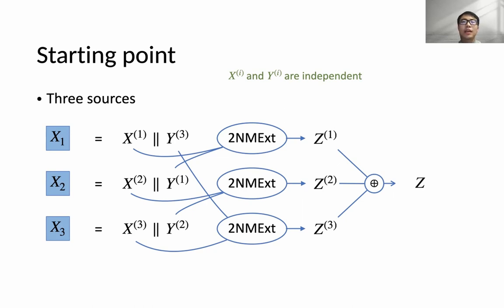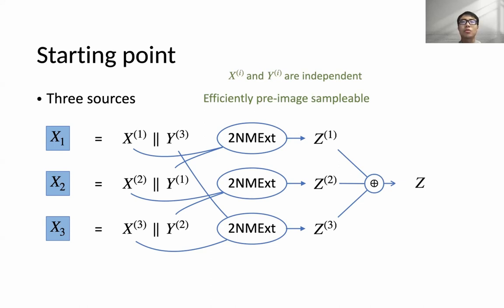This construction is also efficiently pre-image-sampleable if the underlying two-source non-malleable extractor is efficiently pre-image-sampleable. Intuitively, this is because the construction has a tree-like structure. Given an output Z, one can efficiently sample Z1, Z2, and Z3, and then do pre-image sampling on each two-source non-malleable extractor to get the X^i and Y_i. Finally, the input sources X1, X2, and X3 can be reconstructed from all the X^i and Y_i.